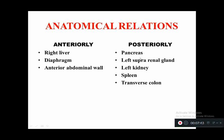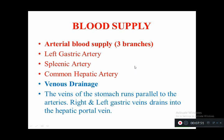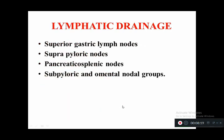The blood supply to the stomach: arterial supply is provided by three main branches — left gastric artery, splenic artery, and common hepatic artery. The veins of the stomach run parallel to the arteries. The right and left gastric veins drain into the hepatic portal vein. Lymphatic drainage involves the superior gastric lymph node, suprapyloric node, and pancreaticosplenic node.